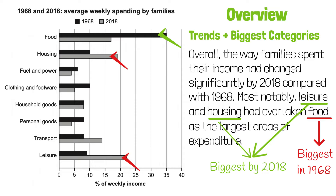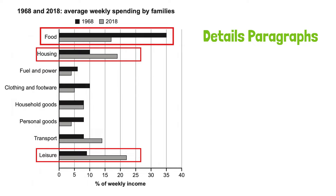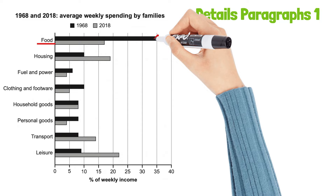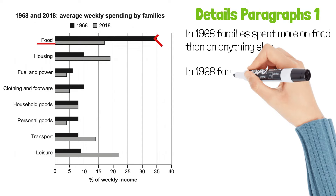Now let's move on to details paragraphs. How should we group the categories? I think this should be easy if you've written a good overview. In the overview, we said that these are the three biggest categories, so we can group them into details paragraph 1. And in details paragraph 2, we talk about the smaller categories. Let's start with food — it was the biggest category in 1968. So we can say that in 1968, families spent more on food than on anything else, or families spent most on food. Both are good.